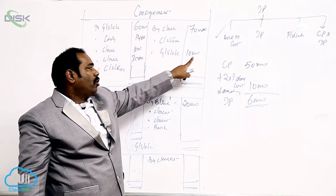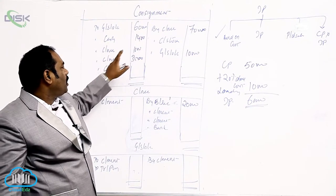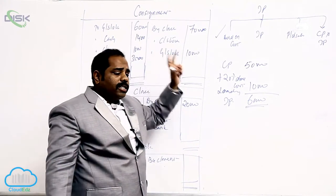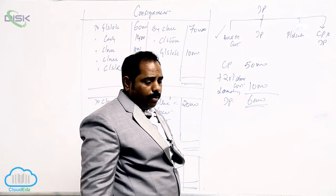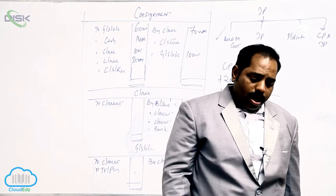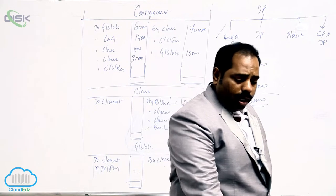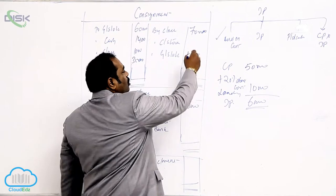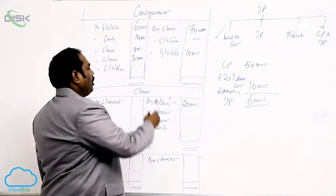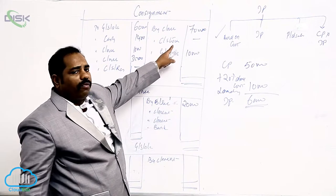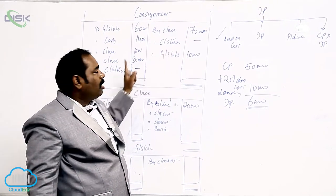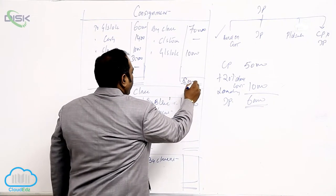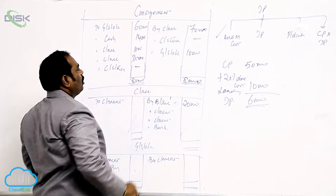The goods were sent at invoice price and unloaded by writing on the credit side. Entries include: cash for expenses, consignee's account for expenses made by consignee, and consignee's account for commission. There is no unsold stock — the entire stock was sold. When there is no unsold stock, there is no consignment stock reserve and no need to unload any unsold stock reserve.